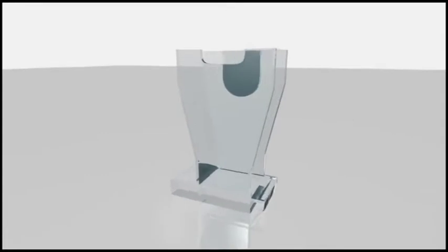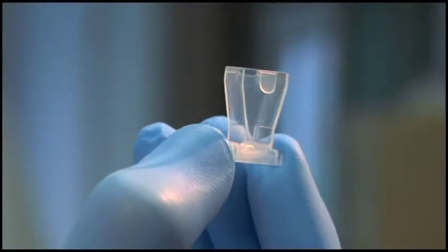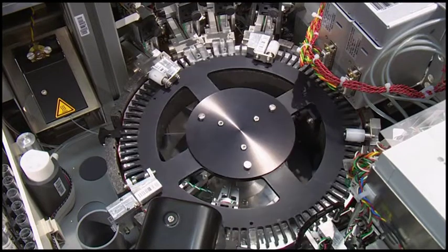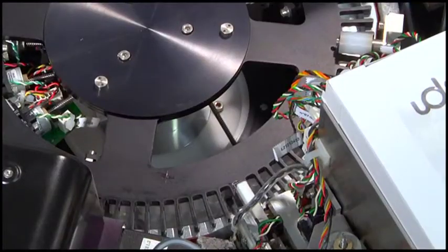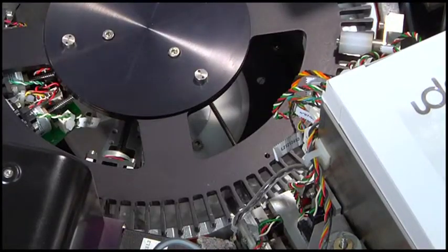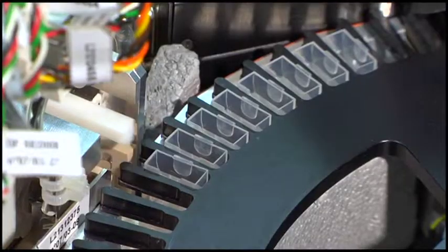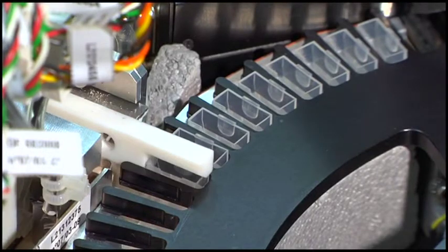Utilizing a single cuvette for each individual test, the IDS Isis processes each assay independently through its 90 position, 37 degrees Celsius carousel. The carousel has access to all the modules and delivers the cuvette to the relevant module at the scheduled time.